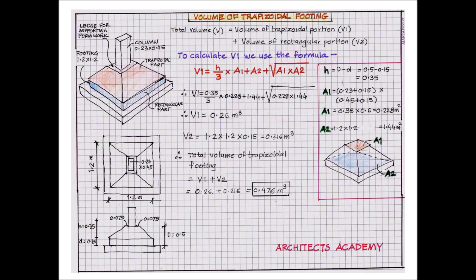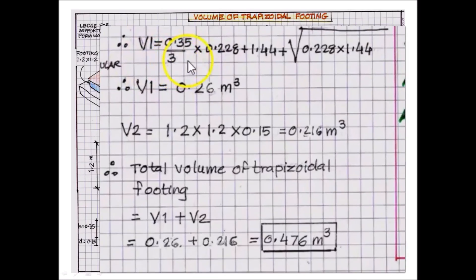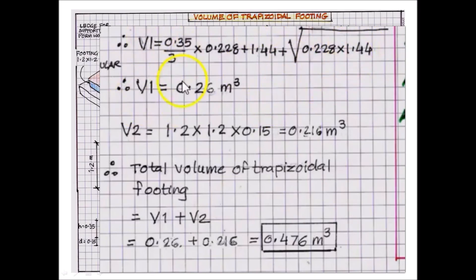Substituting these values into the equation, we get V1 = (0.35 / 3) × (0.228 + 1.44 + √(0.228 × 1.44)). After working out this equation, we get V1 = 0.26 cubic meters. This completes the first part — the volume of the trapezoidal portion.